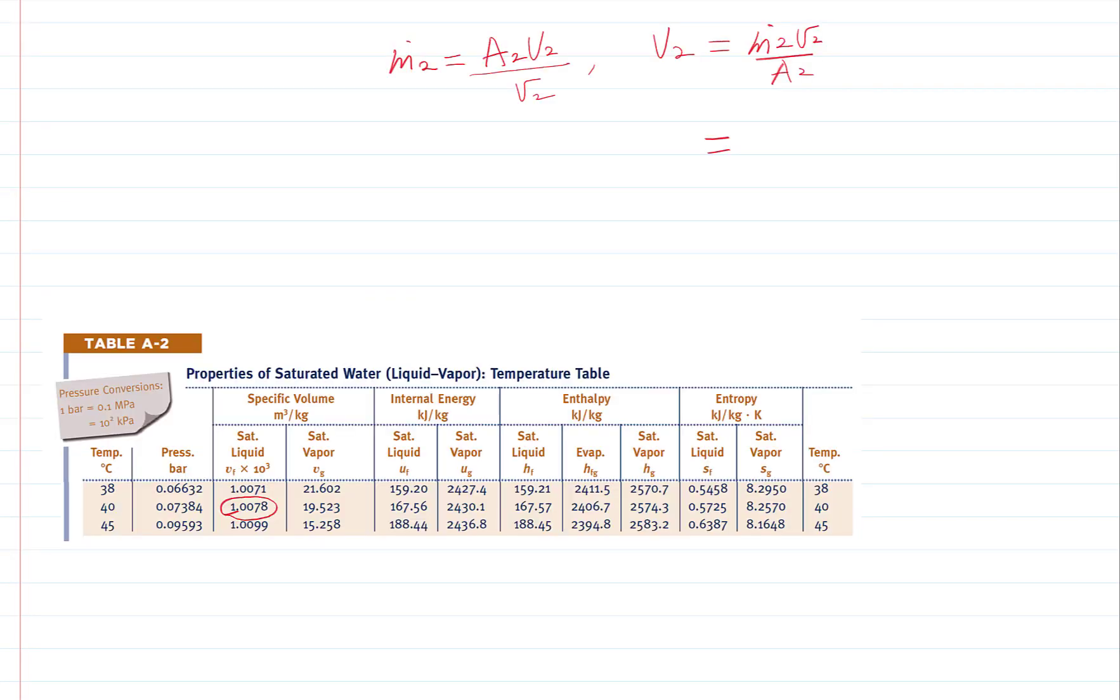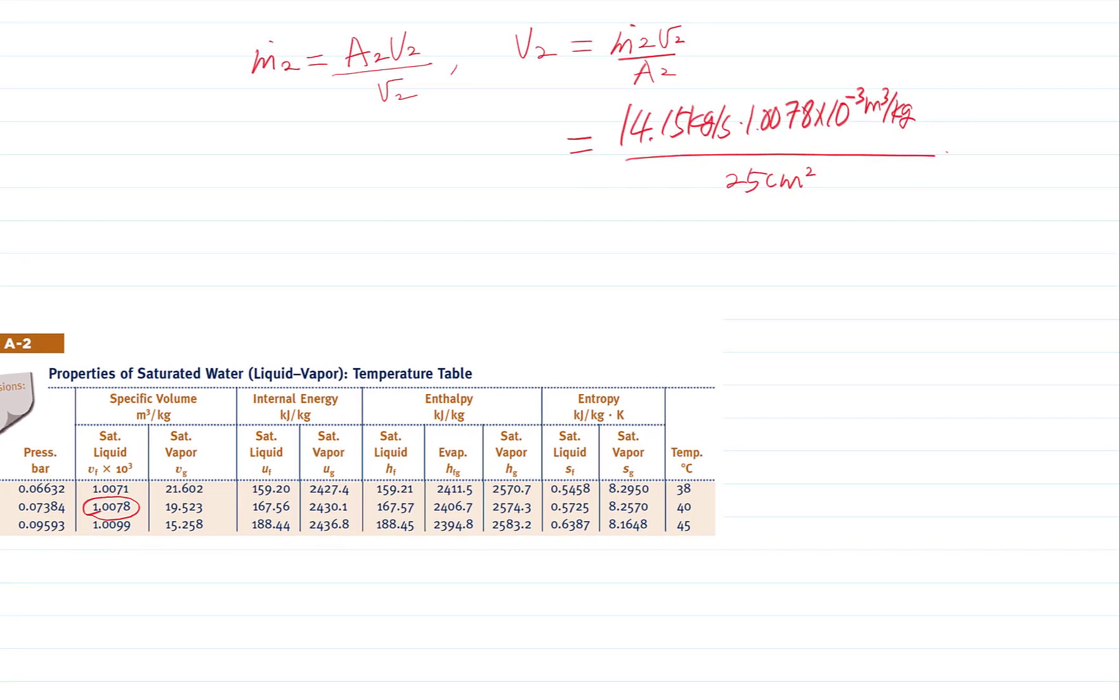So, the velocity at inlet 2 can be calculated. So, all the unknowns were evaluated from the mass balance equations.